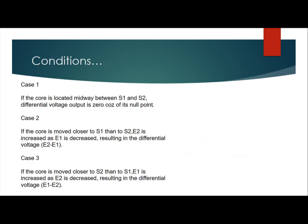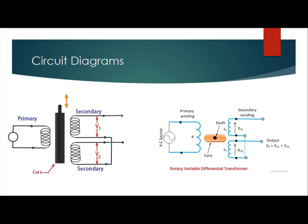In case two, if the core is moved closer to S1 than S2, E1 is increased as E2 is decreased, resulting in a differential voltage of E1 minus E2. If the core is moving towards the first secondary coil, the voltage in the first secondary coil is more than that of the second secondary coil, so the result will be E1 minus E2.